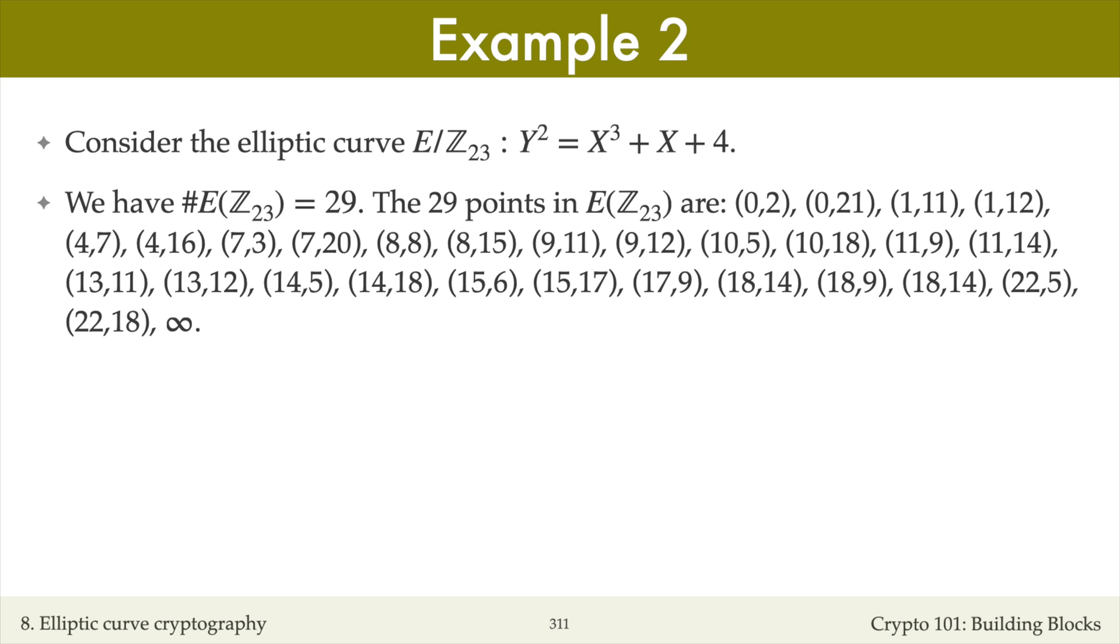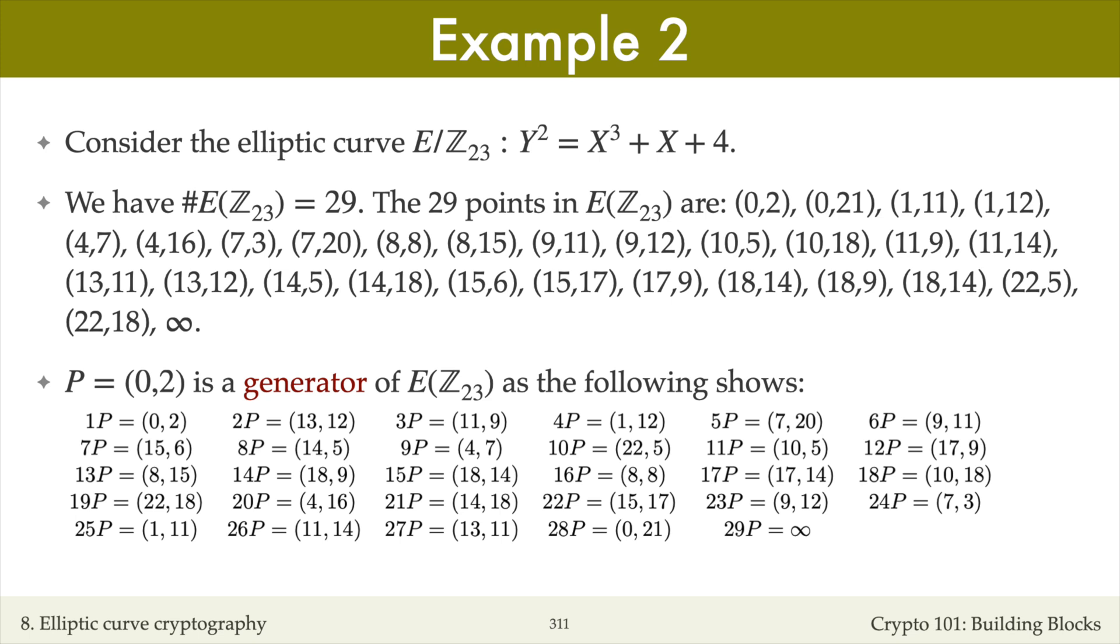So by the previous theorem, any point on the curve except the point at infinity can serve as a generator for the set of all points. Let's take P equals (0, 2) to be a generator.